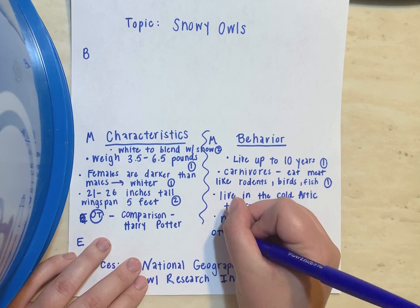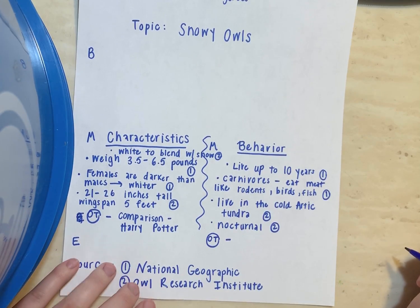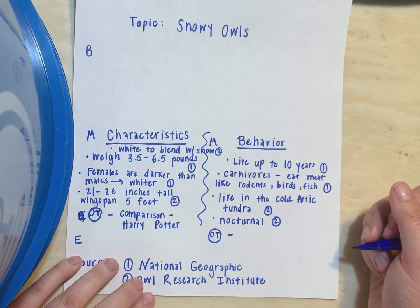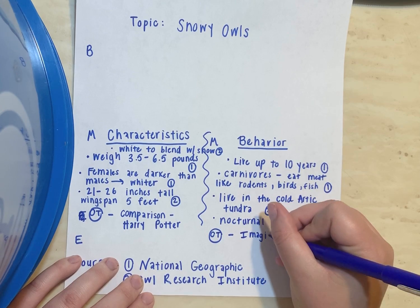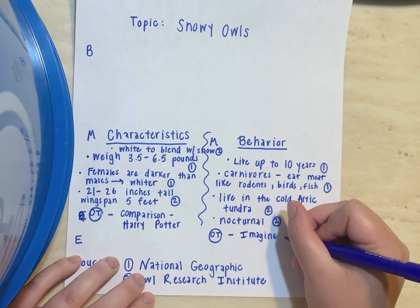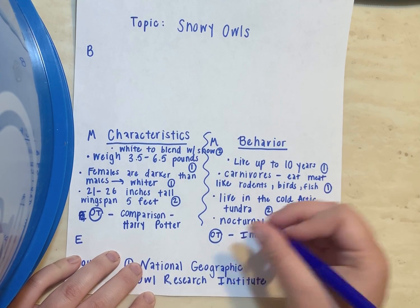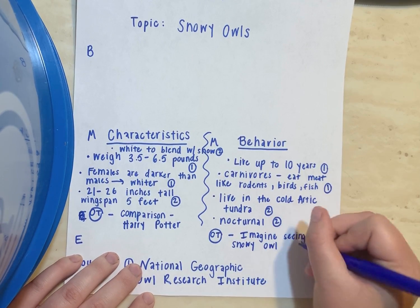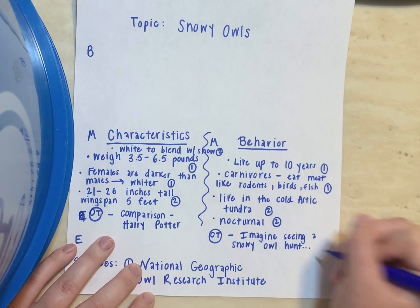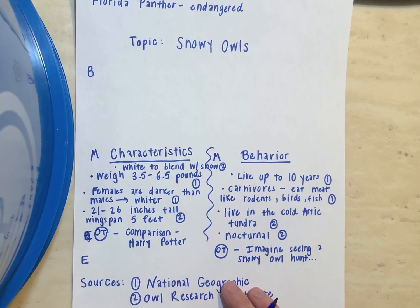I can't forget my original thought for behavior. I think I'm going to use an imagine, because Ms. Johns loves to use imagine. I'm not going to write it out fully — I'll just give myself an idea: 'Imagine seeing a snowy owl hunt.' That's just how I'm going to start off my imagine. Now I have my two middles complete.